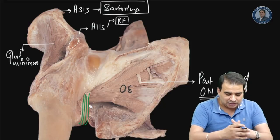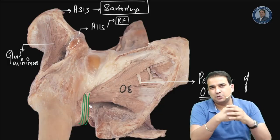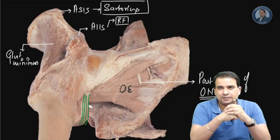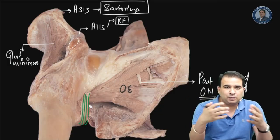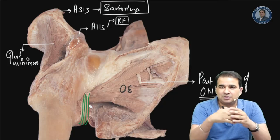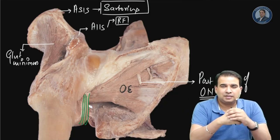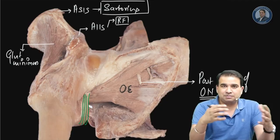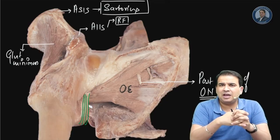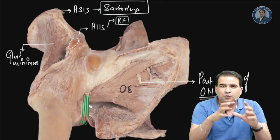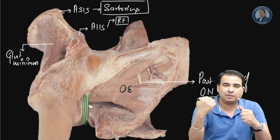Coming to the main topic - the capsule and ligaments of the hip joint - there are three main ligaments capsulating the hip joint. One is the pubofemoral ligament, with a major attachment toward the pubic bone. Then there is the iliofemoral ligament, which is the largest and strongest. Finally, there is the ischiofemoral ligament, the weakest ligament of the hip joint, present on the posterior aspect.